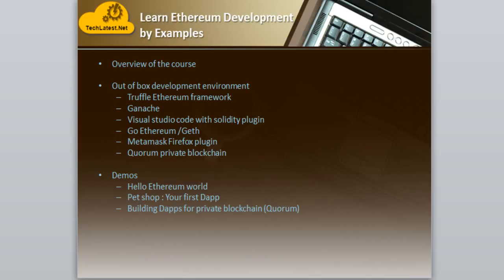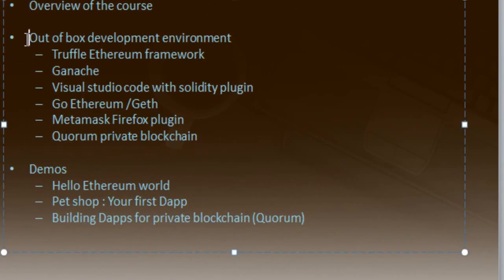So let me give you the overview of the course. The out-of-the-box environment we are going to have is a virtual machine. That virtual machine can be up and running in minutes, and it is available on Azure and Google Cloud at this moment. Down the line it may be available on other cloud providers like AWS. The advantage here is you don't need to set up the entire environment — you just go to Azure or Google Cloud, get your machine up and running, and start learning Ethereum development.